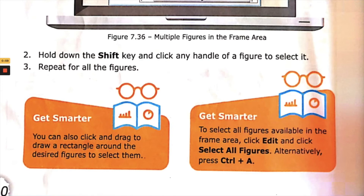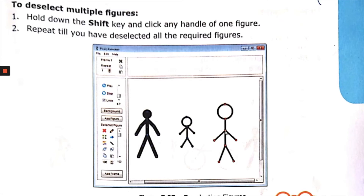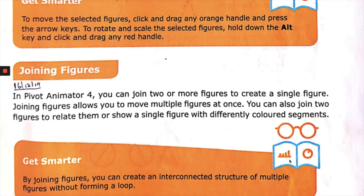Alternatively, press Ctrl+A to select all figures. To deselect multiple figures, hold down the Shift key and click any handle of each figure, as shown in figure 7.37. To move the selected figures, click and drag any orange handle or press the arrow keys. To rotate and scale the selected figures, hold down the Alt key and click and drag any red handle.